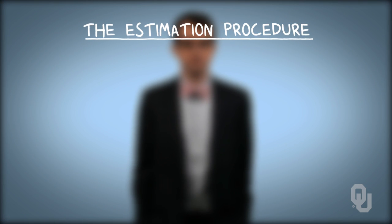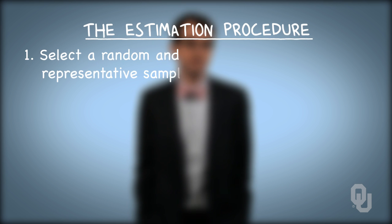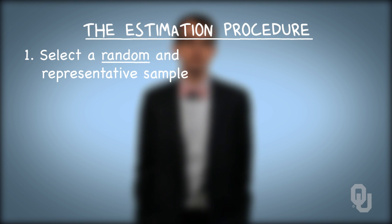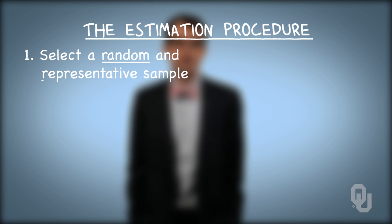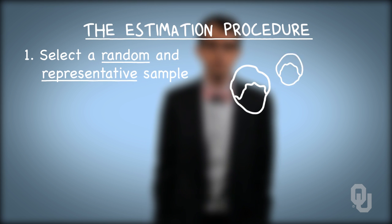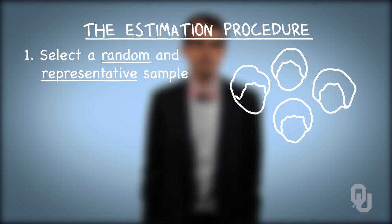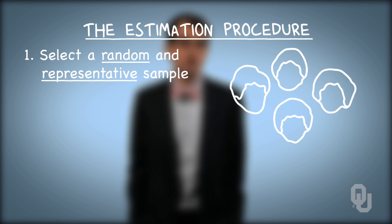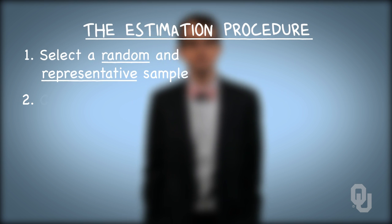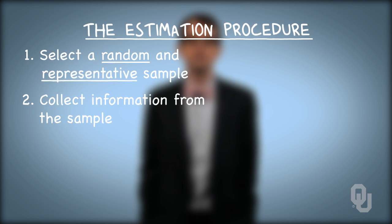The estimation procedure has four straightforward steps. The first is to select a random and representative sample from the population of interest. Random suggests that any one member of the population is just as likely to be chosen to be in the sample as any other. Choosing a random sample hopefully eliminates any sort of bias that may affect our estimate. Representative suggests that members of the sample generally look the same as the population we're trying to estimate. The second step in the estimation procedure is to collect information from the members of the sample — namely, the realizations of the random variable or variables of interest from the members of that sample.